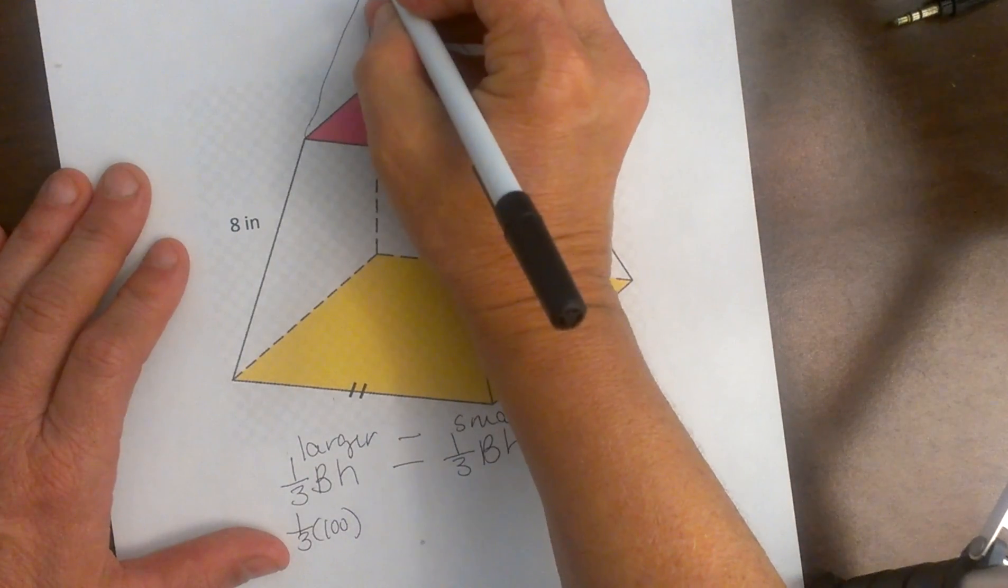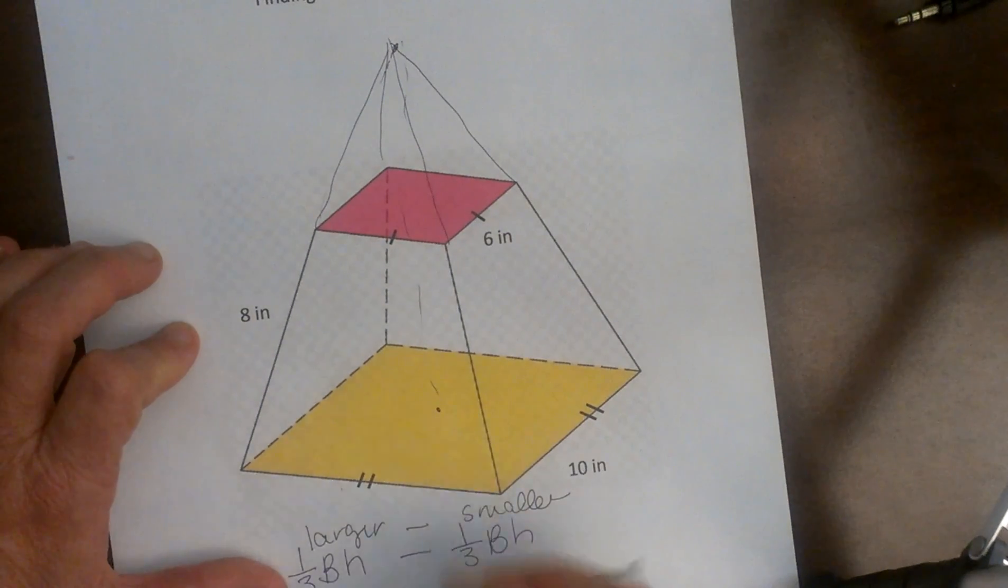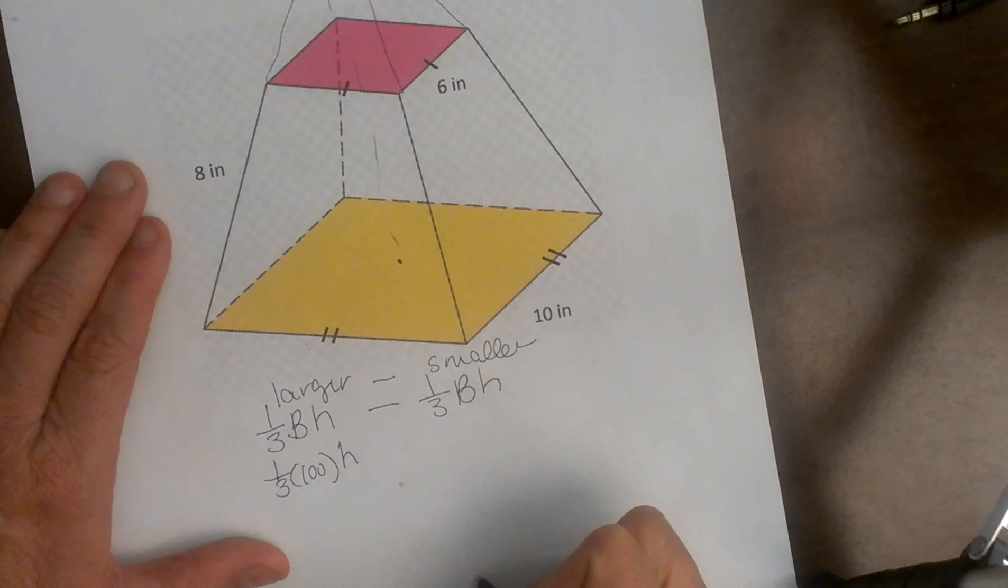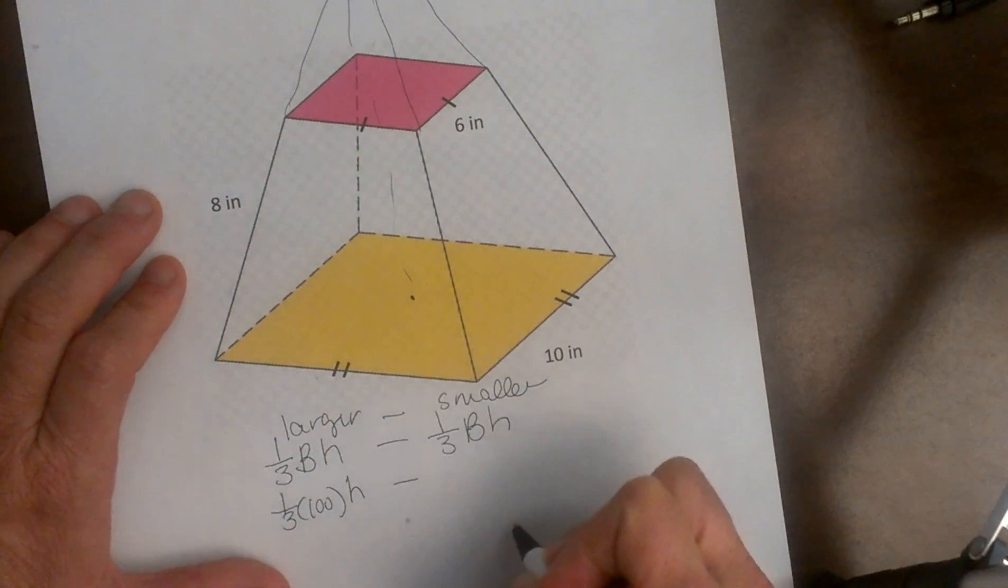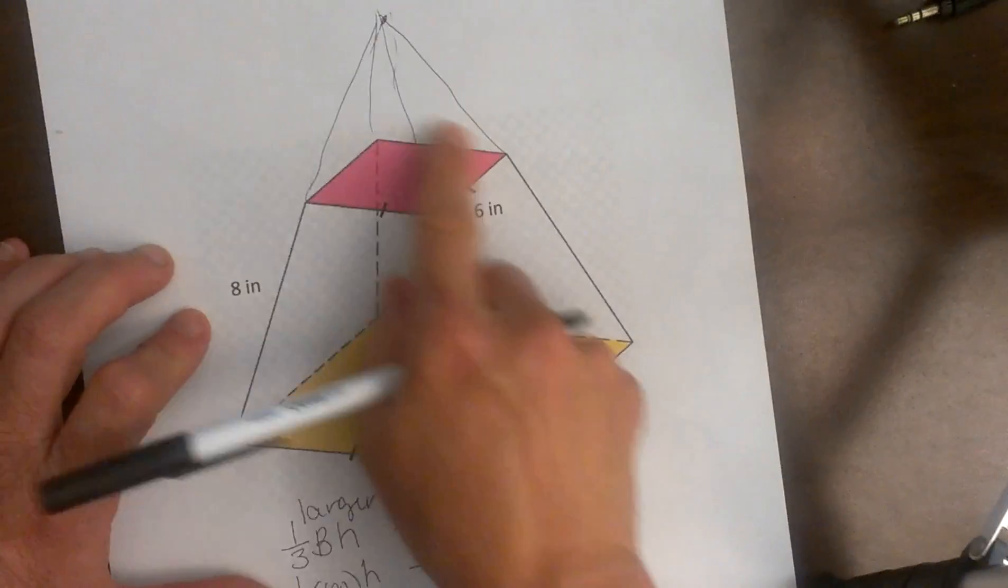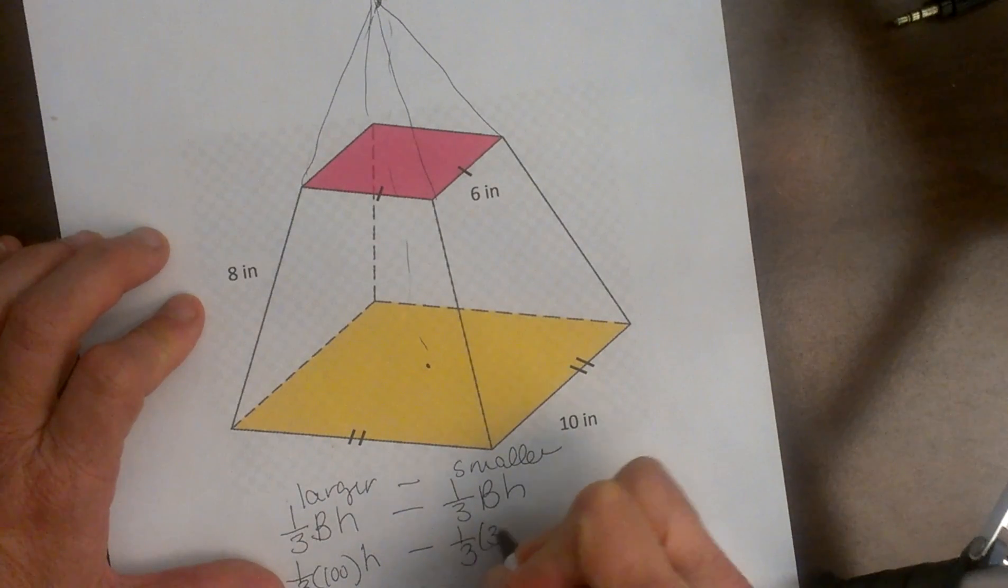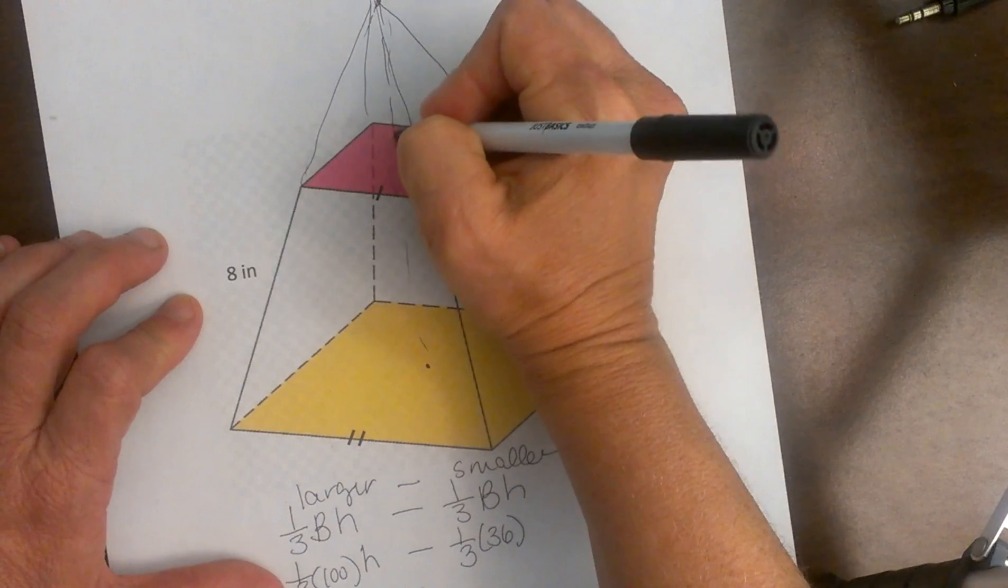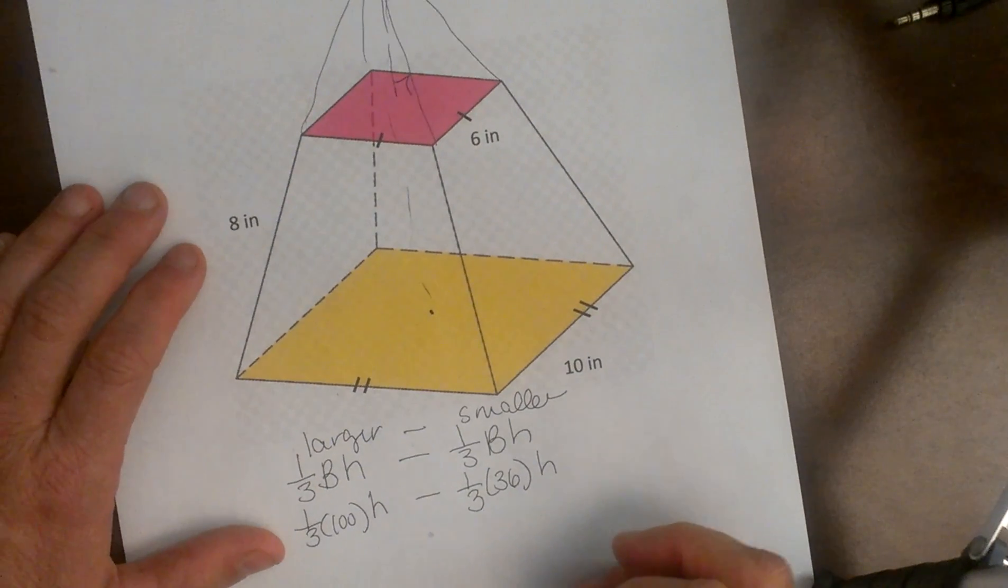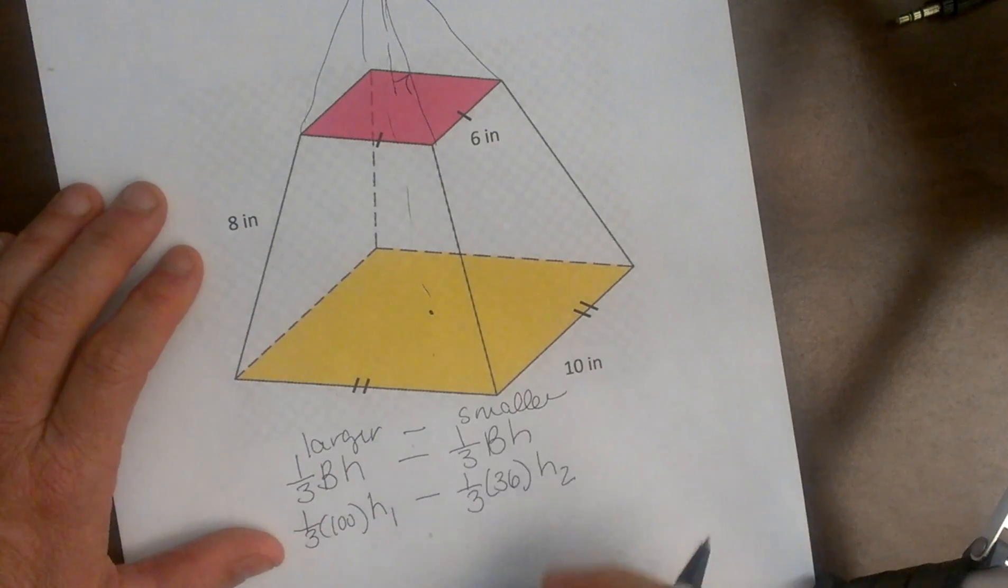Well the height of the pyramid is from this apex all the way down and that is going to be a little tricky to figure out but we will figure that out in a minute. So I am going to leave my h in here as just an h right now and then I am going to subtract one third the base area. Well what is the base area of this small pyramid? Well that is six by six so that is just 36 and I have got to figure out this height so I am going to leave that as my other h, my unknown h. So I will call this h1 for the full height and h2 for my small height.